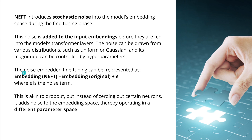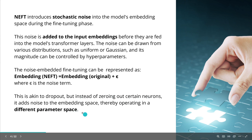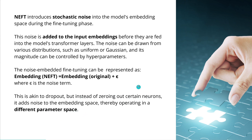The equation is very simple: the embeddings in this new fine-tuning methodology equal the original embeddings plus an epsilon — a noise term you simply add. If you know fine-tuning, you know the classical dropout functionality. But instead of zeroing out certain neurons with dropout, here we add some noise to the embedding space, thereby operating in a different parameter space.